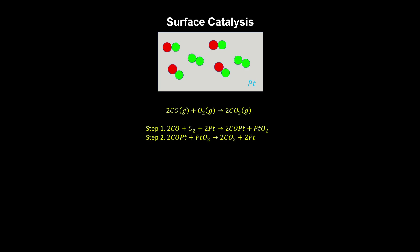Surface catalysis involves a reactant or intermediate that binds to a surface or forms a covalent bond with it, and it's a heterogeneous type of catalysis where the reactants and catalysts are not in the same phase. For example, in a catalytic converter of a car, a sheet of platinum is used to oxidise harmful carbon monoxide into carbon dioxide gas.